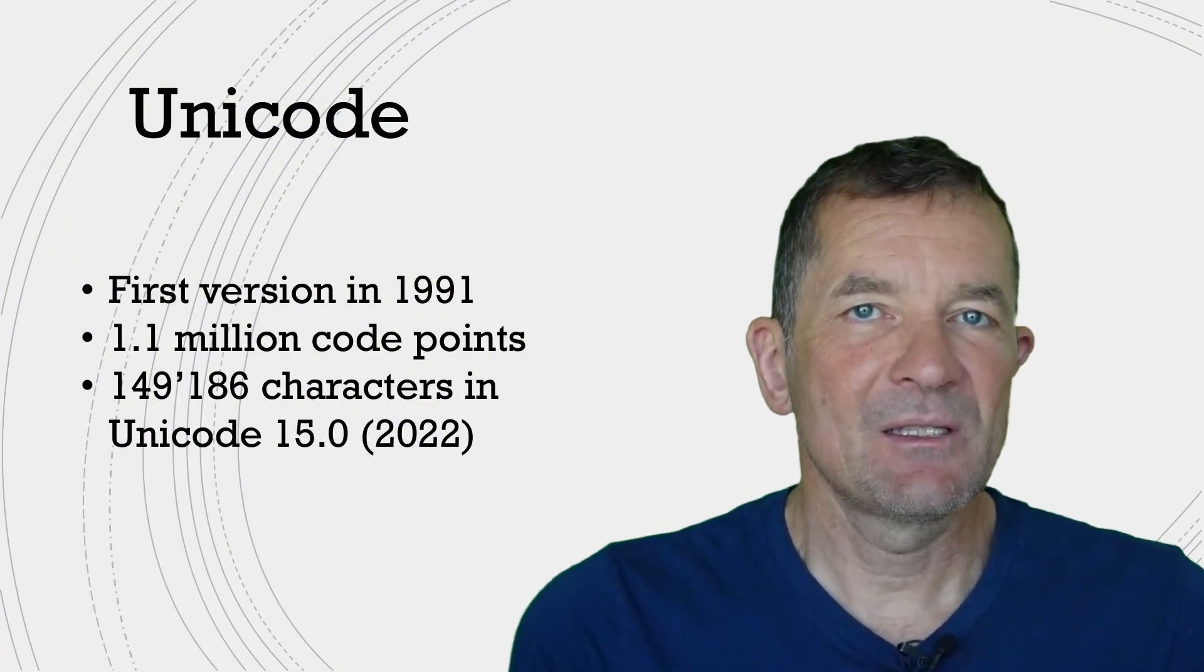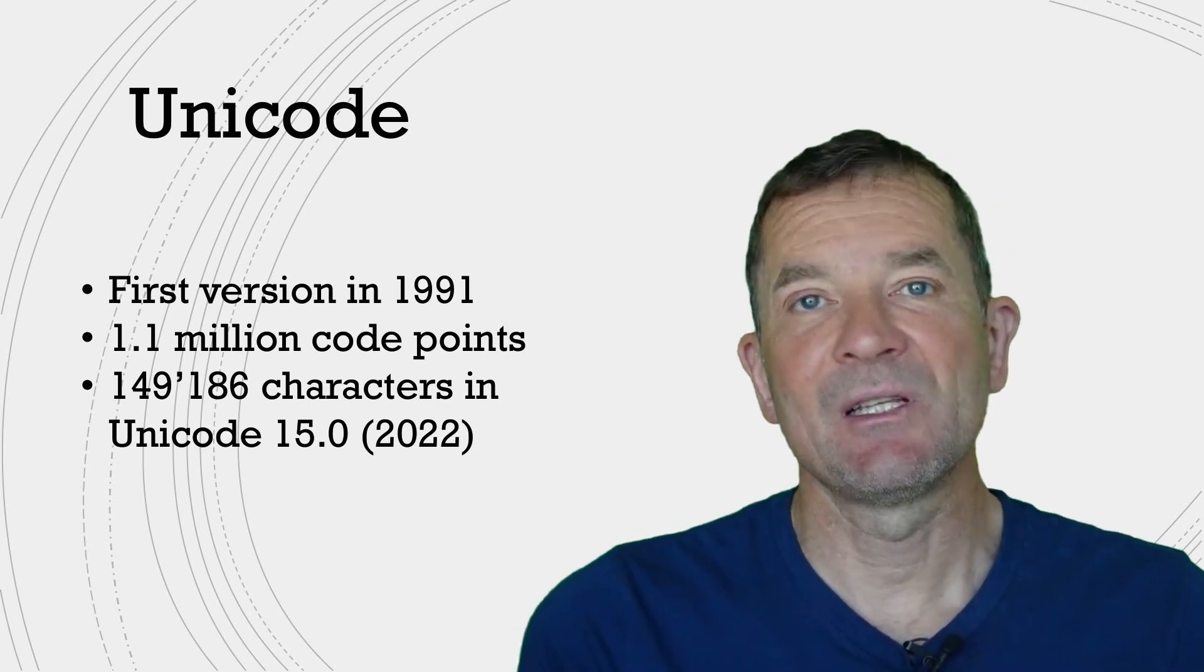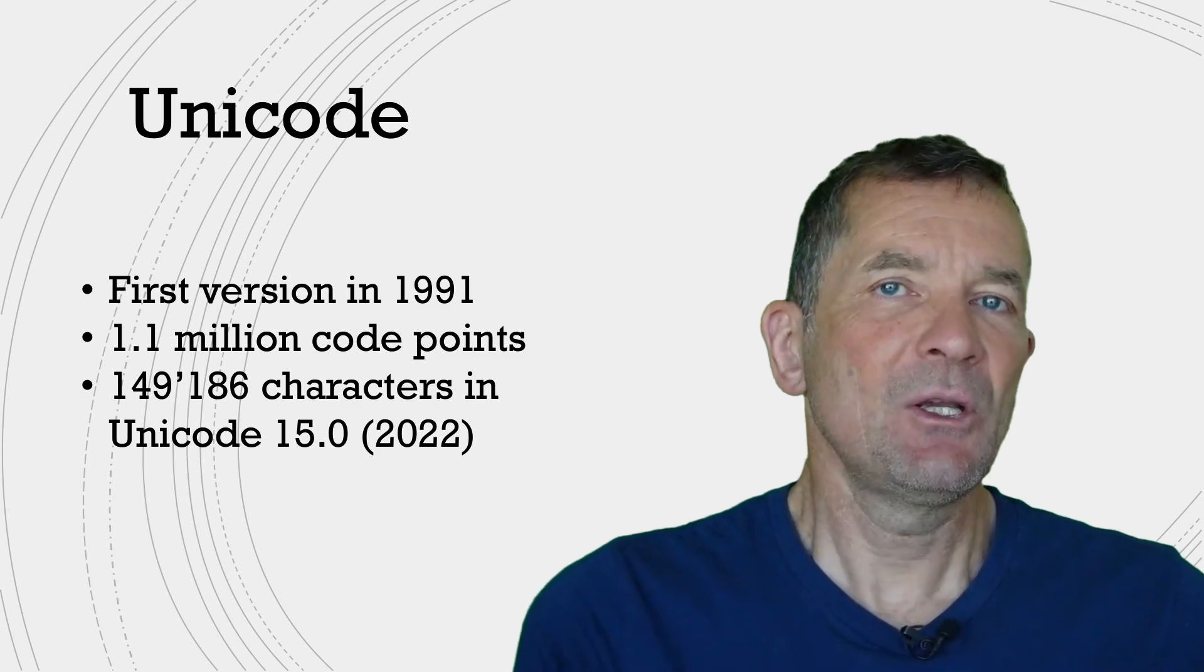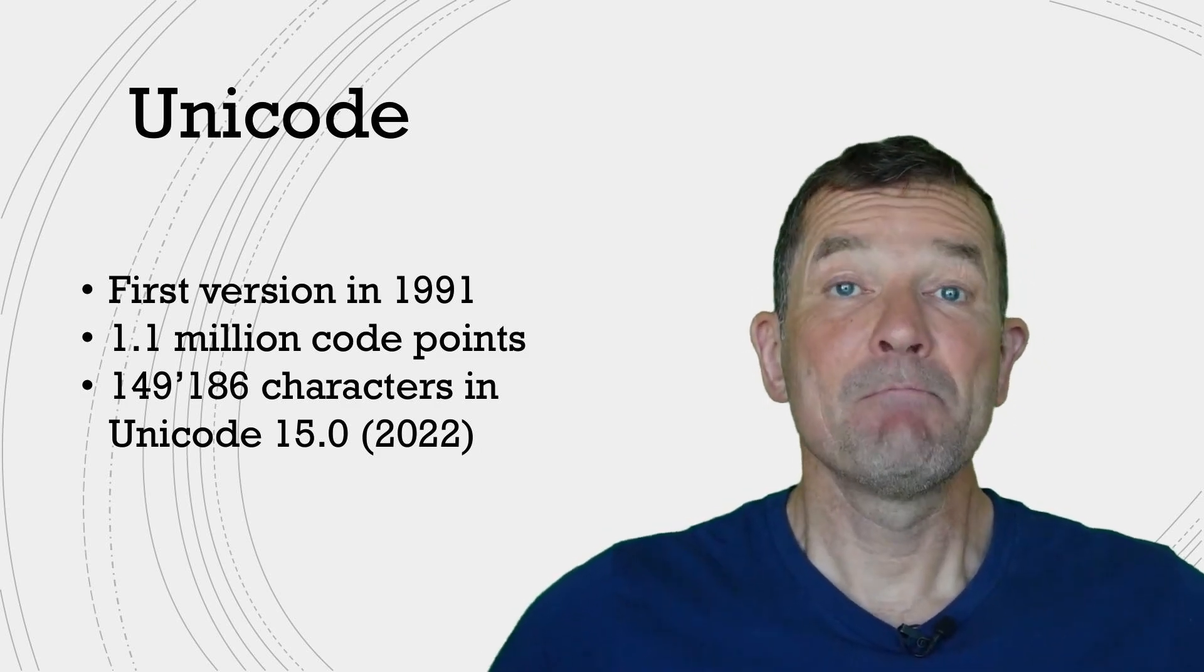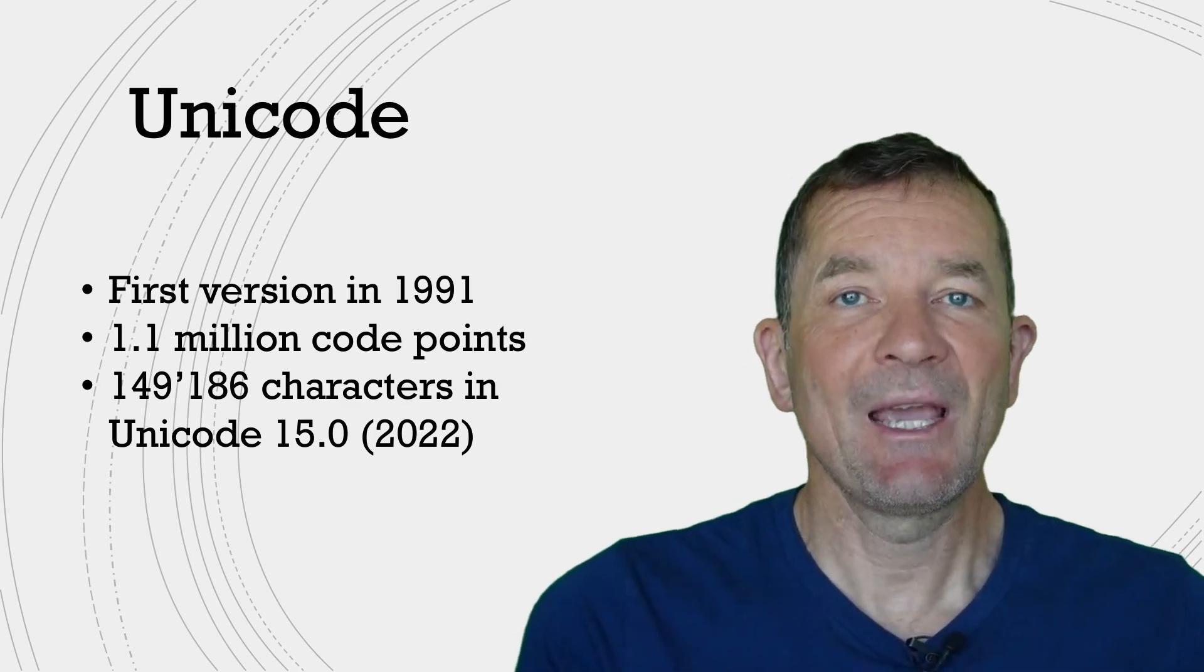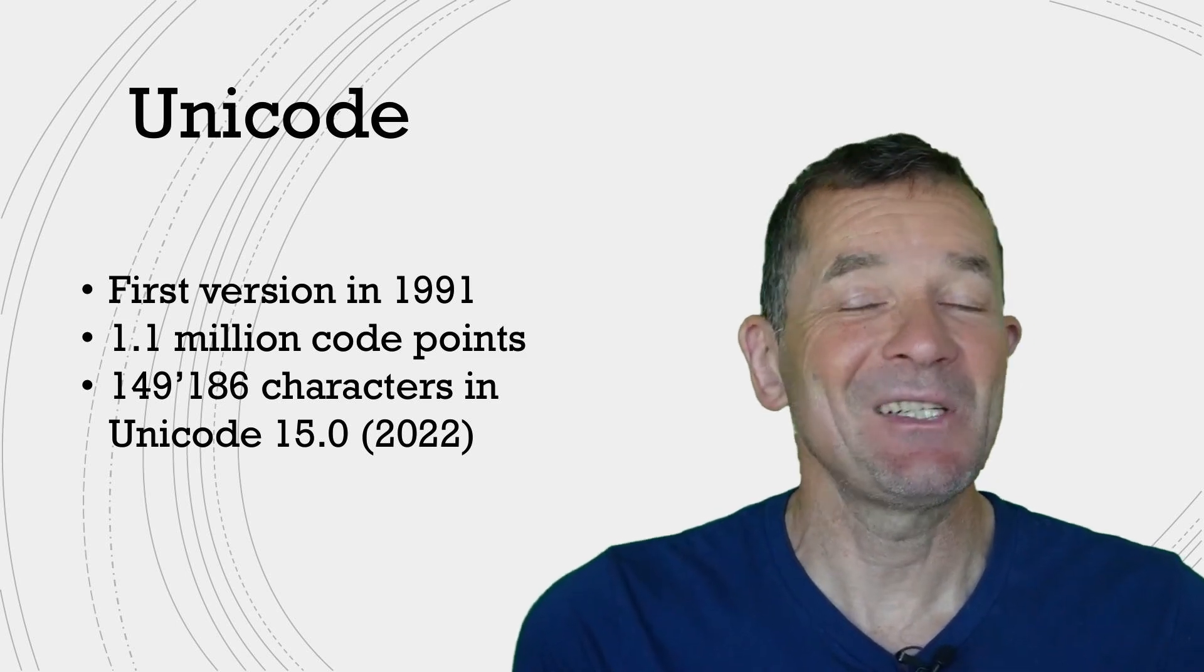All of this at some point led to the creation of Unicode, which has been around since 1991. Unicode takes a really different approach. It creates a much bigger model of how many characters you can represent in Unicode. These are 1.1 million characters. A lot.